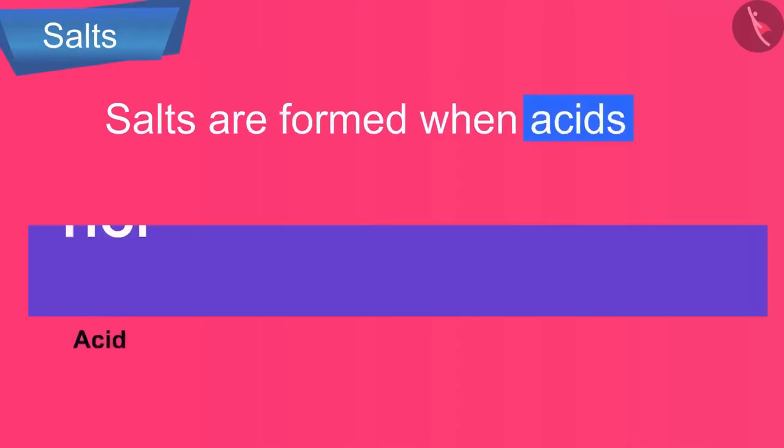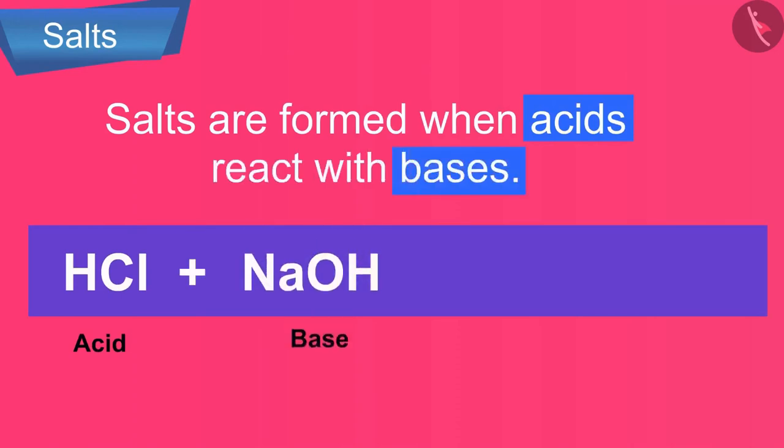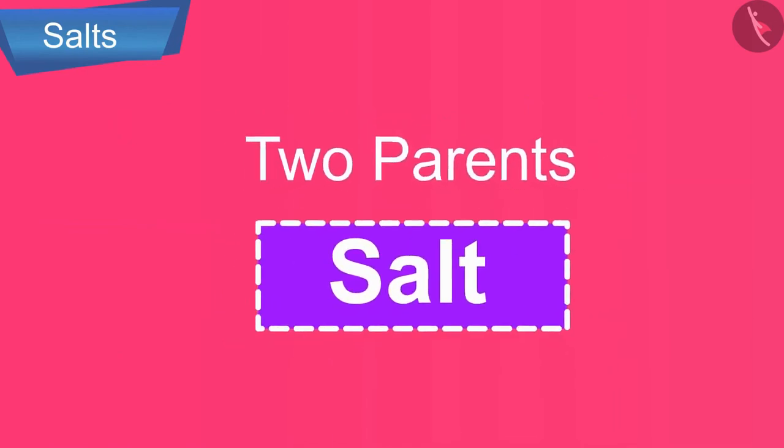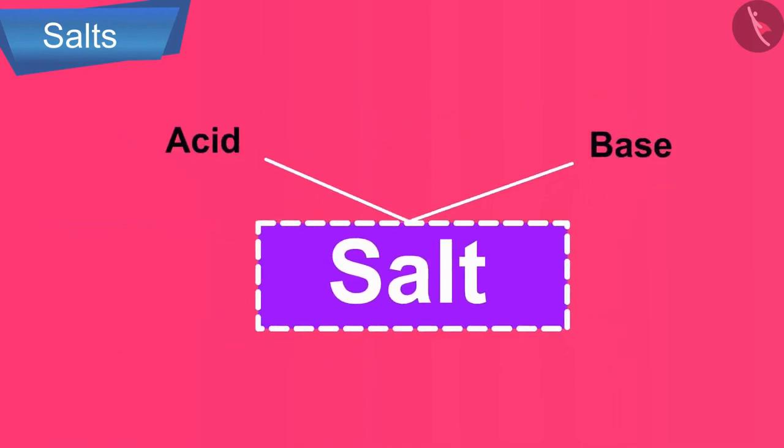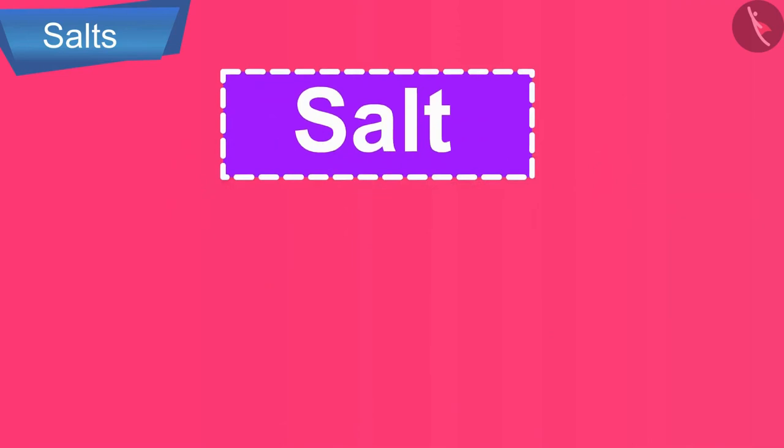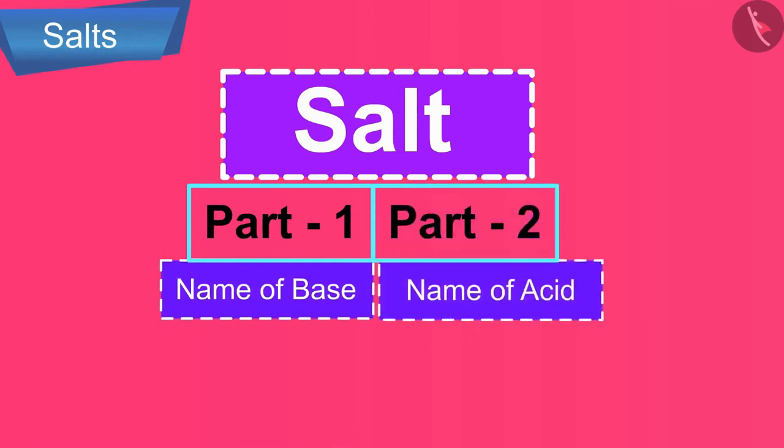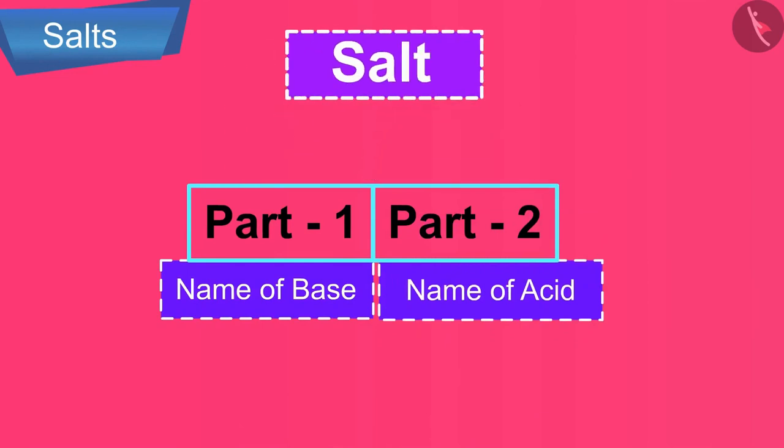Salts are formed when acids react with bases. In a way, we can say that a salt has two parents, an acid and a base. So, the name of a salt consists of two parts. The first part of the name of salt is derived from the name of the base, and the second part of the name of the salt comes from the name of the acid.